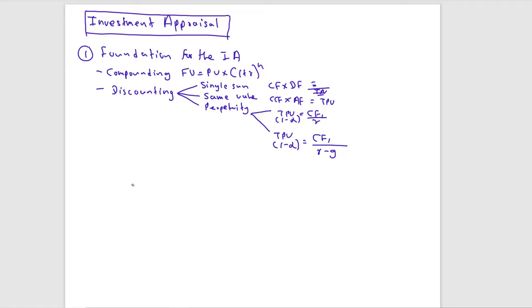If cash flows are received immediately, the annuity factor assumes the first payment is at time zero. To get this, take the annuity factor from year one to year four and add the year zero discounting factor of one. So: 1 + annuity factor (year one to four) gives you the annuity factor from year zero to year four.